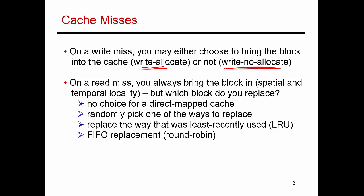When you bring a block into cache, the question is: where do I place it? If you have a direct mapped cache, then every address maps to a unique set, and that set contains a single block in the cache. So in this case, you really don't have a choice — when you bring a block in, you stick it into that location, and whatever was there gets evicted. A direct mapped cache doesn't give you any choice.